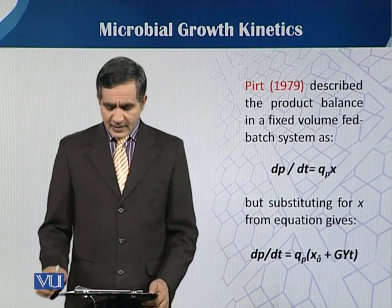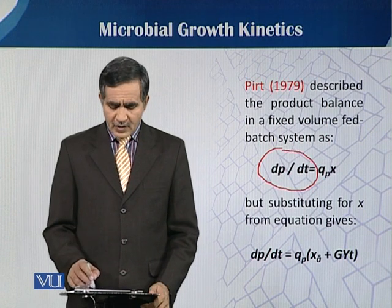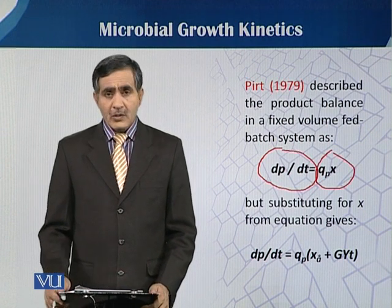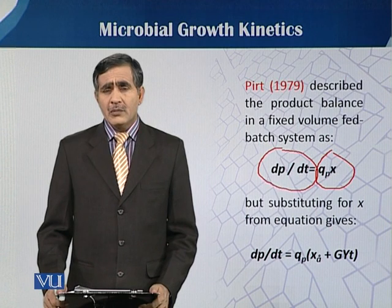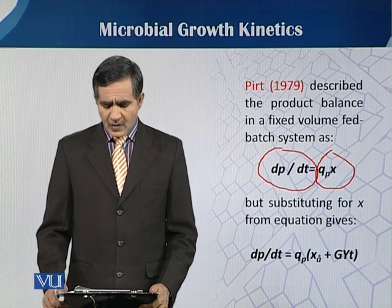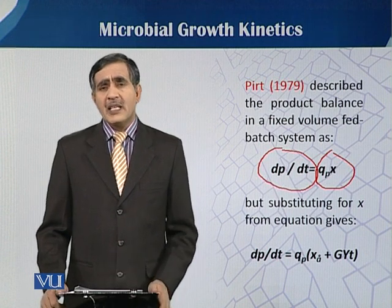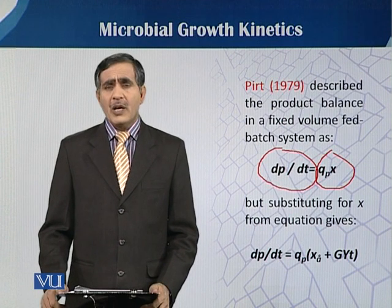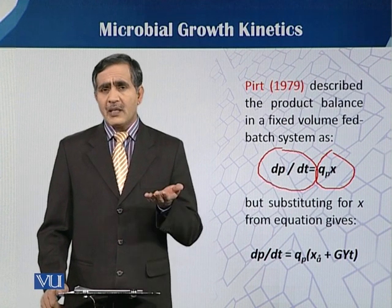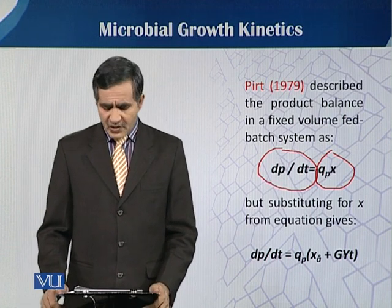We can say that dp/dt is equal to qp·x. The change in product concentration with respect to change in time is qp multiplied by x. This equation basically states that product formation is directly associated with the biomass. As the biomass increases, that has an effect on the change in product concentration.